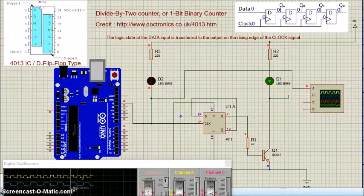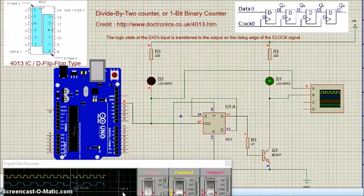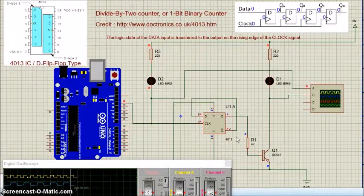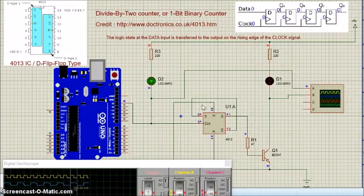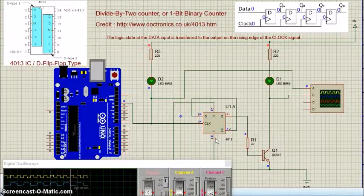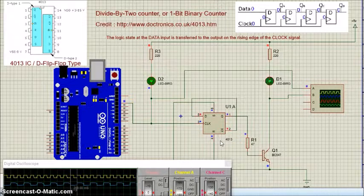You can confirm this by using a digital oscilloscope with frequency function. The output Q and Q-bar switch their logic state alternately in response to set, reset, or the clock pin input.